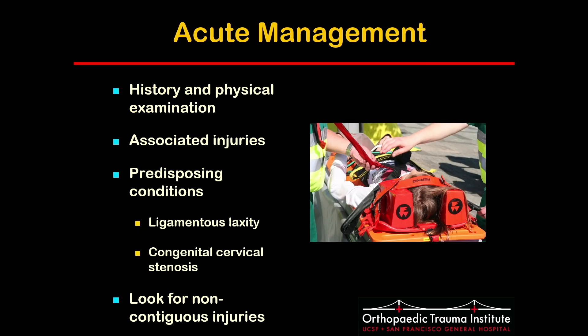In terms of the acute workup, suspicion for spine injury is based on the initial history and physical examination. Knowing the mechanism of injury and the presence of neurologic symptoms, even if transient, is very important. You should look for facial or head injuries, and multi-system trauma should raise suspicion. Additionally, children have predisposing conditions such as syndromes, ligamentous laxity, or congenital cervical stenosis, which could predispose them to neurologic injuries.